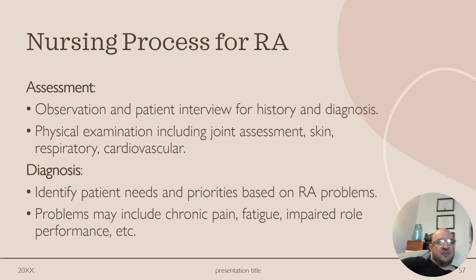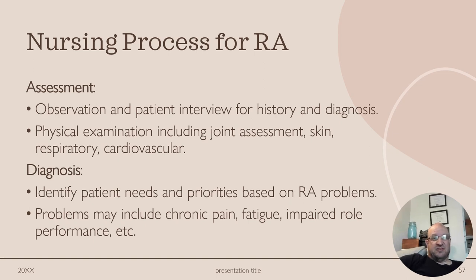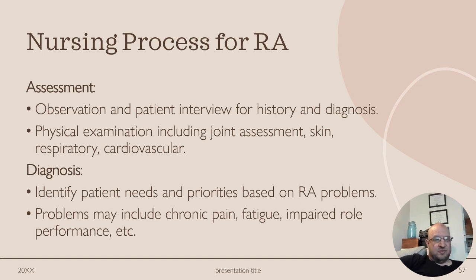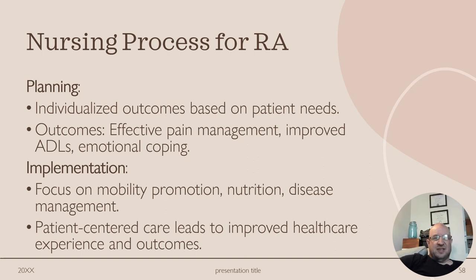The nursing process for RA includes assessment through observation and patient interview for history and diagnosis. Patient examination includes joint assessment, skin, respiratory, and cardiovascular systems. Nursing diagnoses are based on identified patient needs and priorities, and may include chronic pain, fatigue, and impaired role performance. Planning goals include individualized outcomes based on patient needs, effective pain management, improved ADLs, and emotional coping.